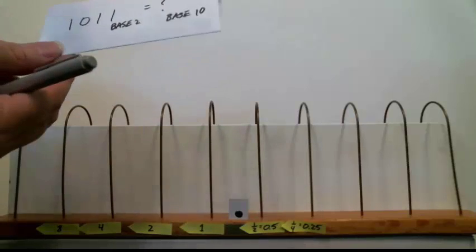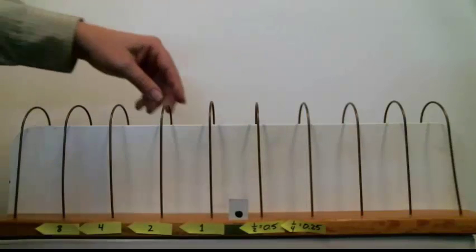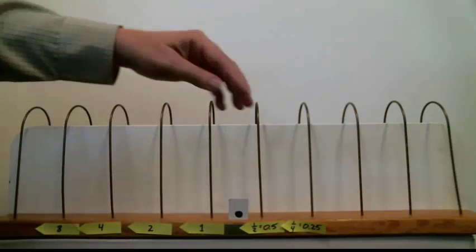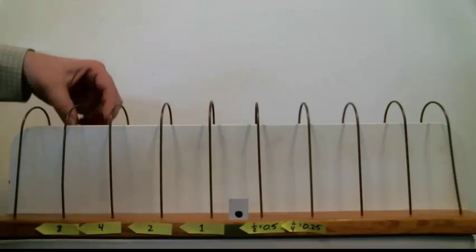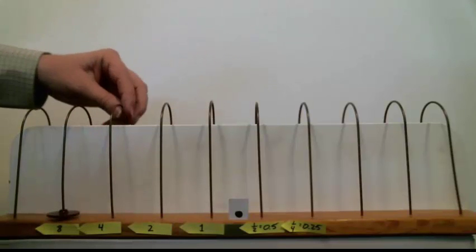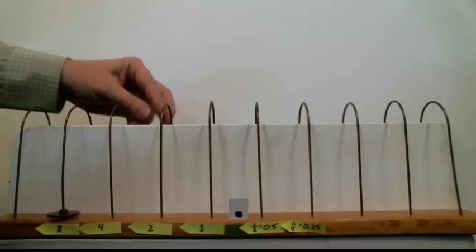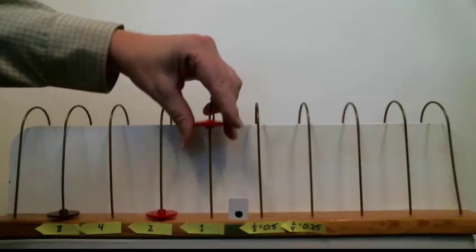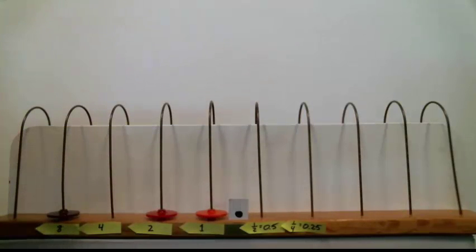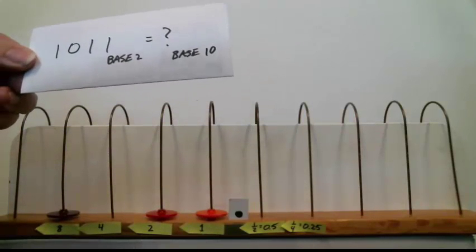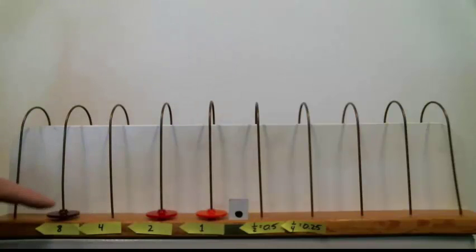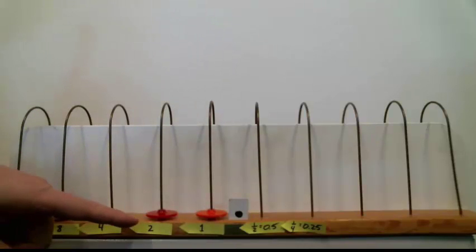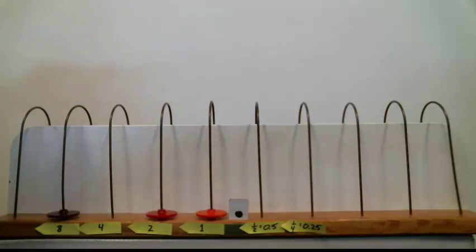So, let's go through this process. Let's see. We have a 1 on the fourth wire over. So, that's here. That's worth 8. We have none on this wire. So, we don't have to add anything there. We have a 1 on the 2's wire. And we have a 1 on the 1's wire. So, there is 1, 0, 1, 1 in base 2. What is that in base 10? That's worth 8 plus 2 plus 1. That looks like 11.